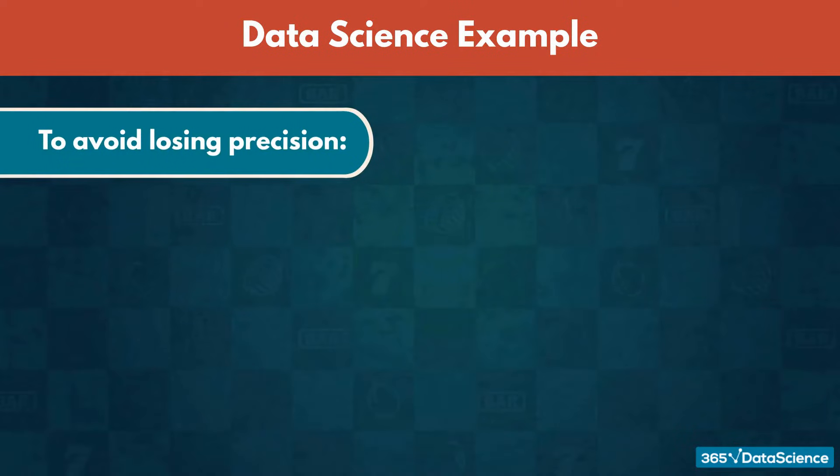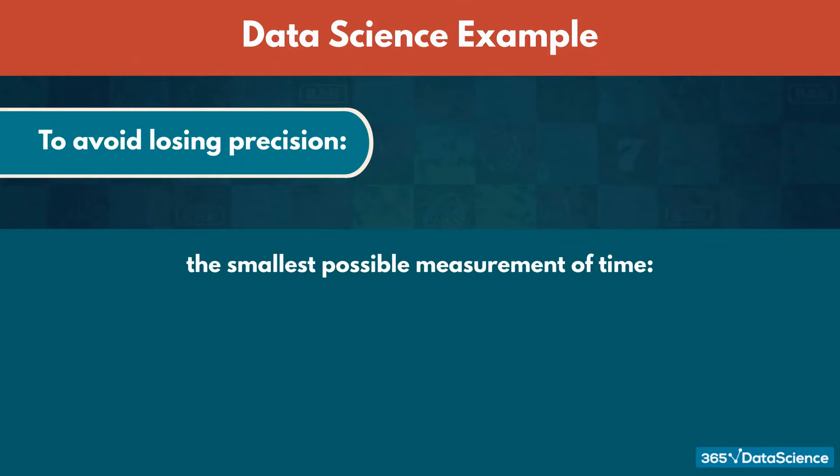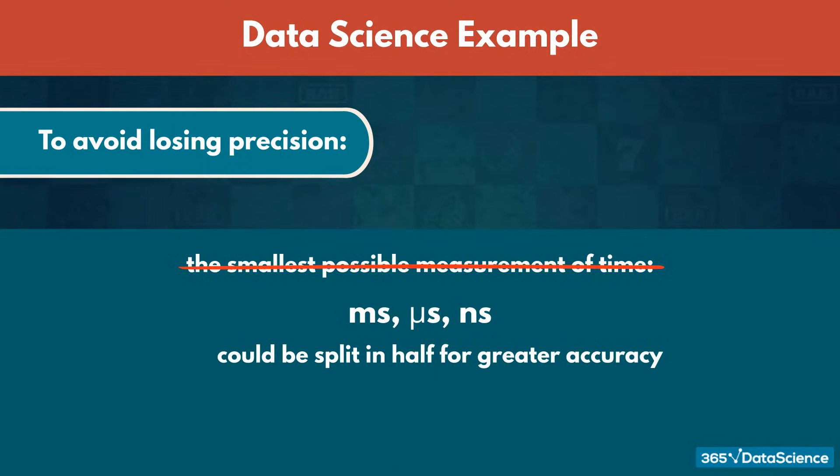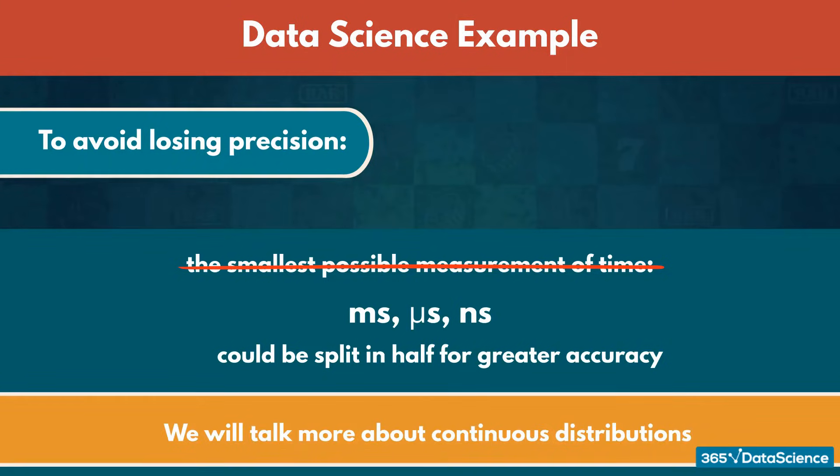To do so, we need to use the smallest possible measurement of time. Since every milli-, micro-, or even nanosecond could be split in half for greater accuracy, no such thing exists. In less than an hour from now, we will talk in more detail about continuous distributions and how to deal with them.